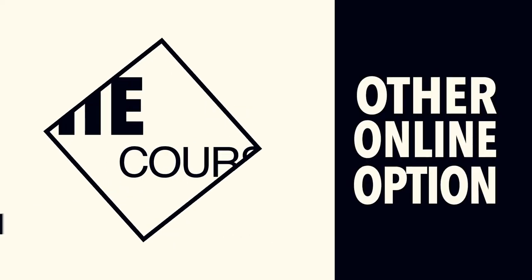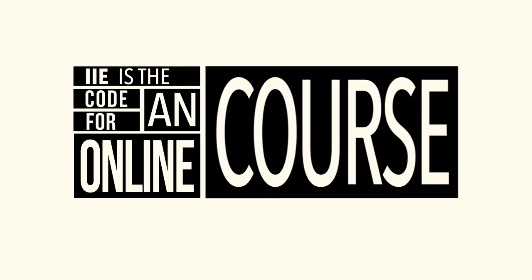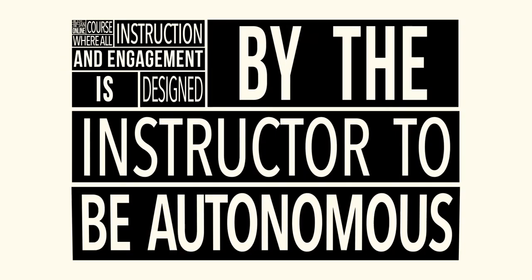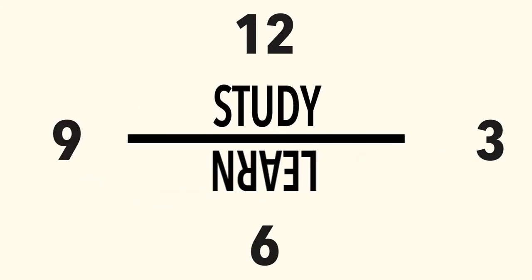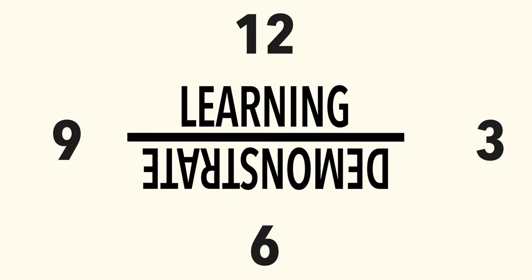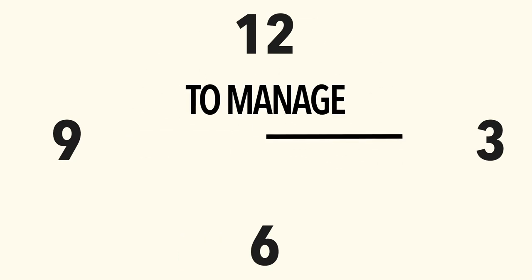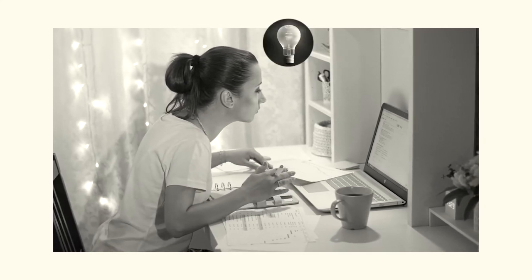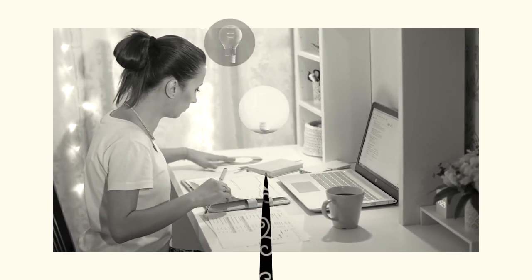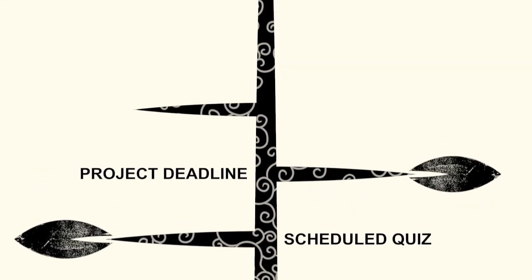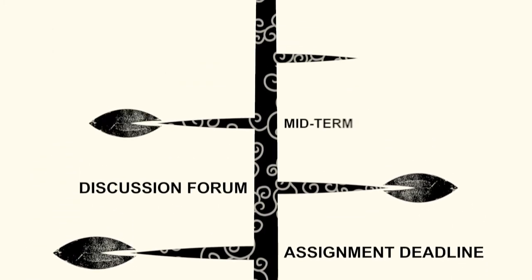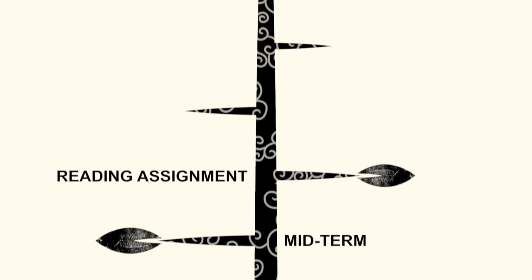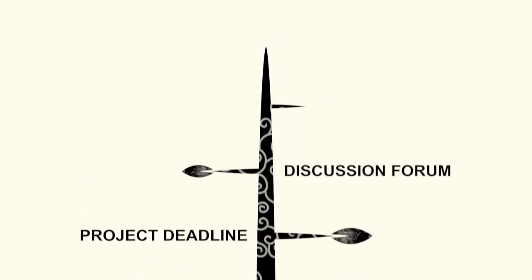Your other online course option is an IIE course. IIE is the code for an online course where all instruction and engagement is designed by the instructor to be automated. This means that you self-manage your online engagement. You study, learn, and demonstrate learning on a time frame that is very flexible, and up to you to manage on a weekly basis. While you learn at your own pace and on your own schedule, you will likely see benchmarks in the semester. Some of these benchmarks might be scheduled quizzes, project or assignment deadlines, or dated discussion forums. However, the time management of meeting these benchmarks is largely in your hands.